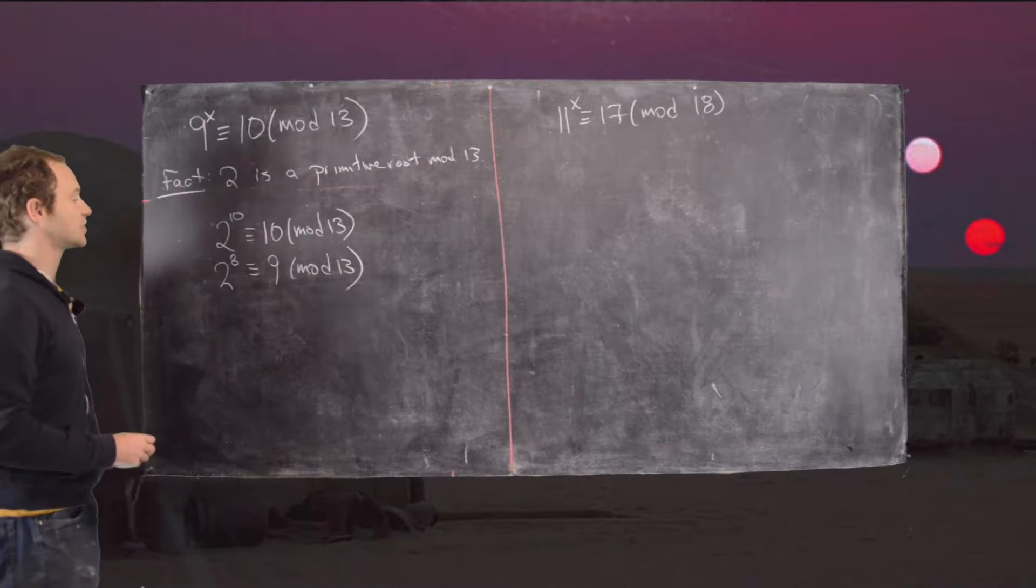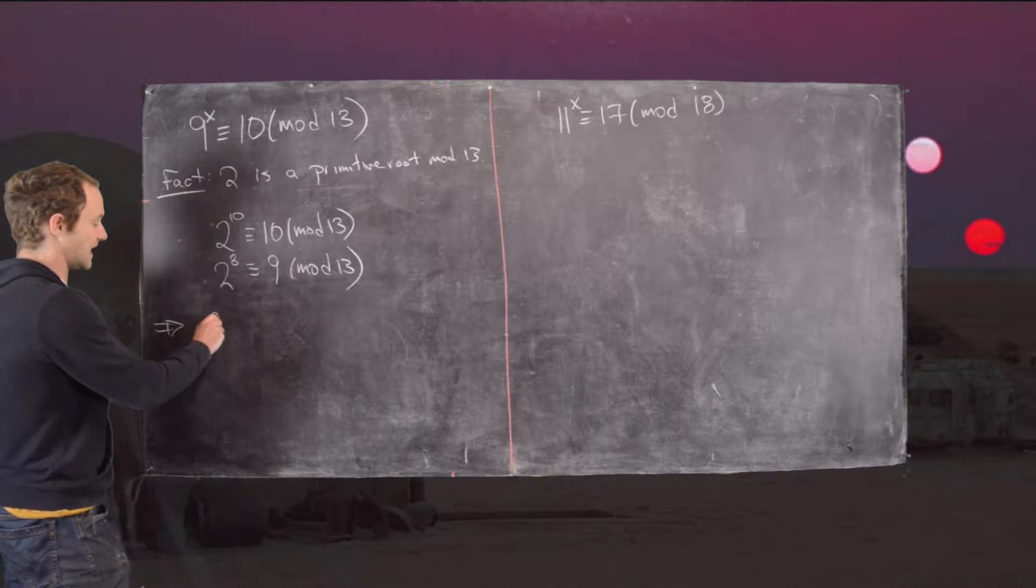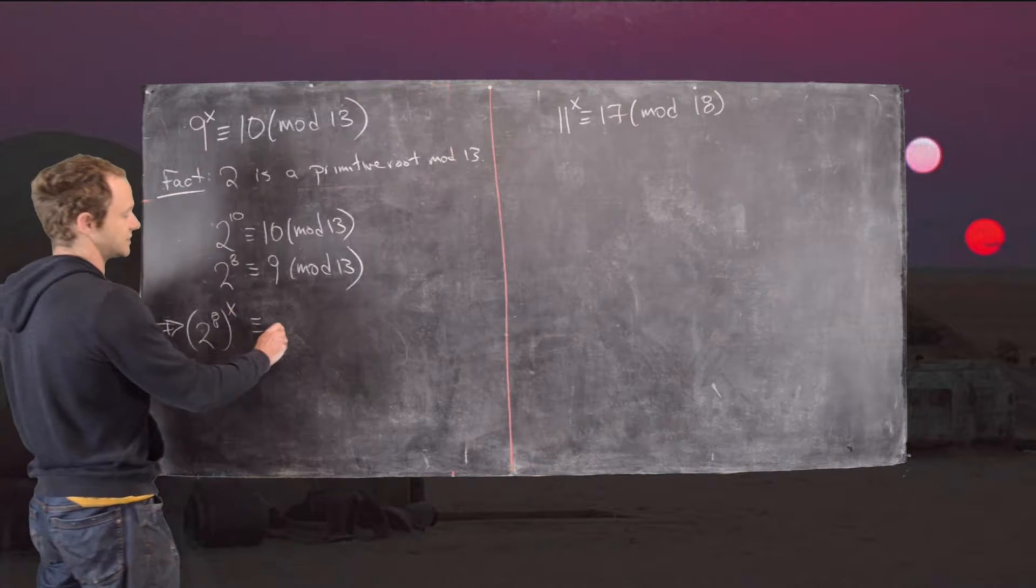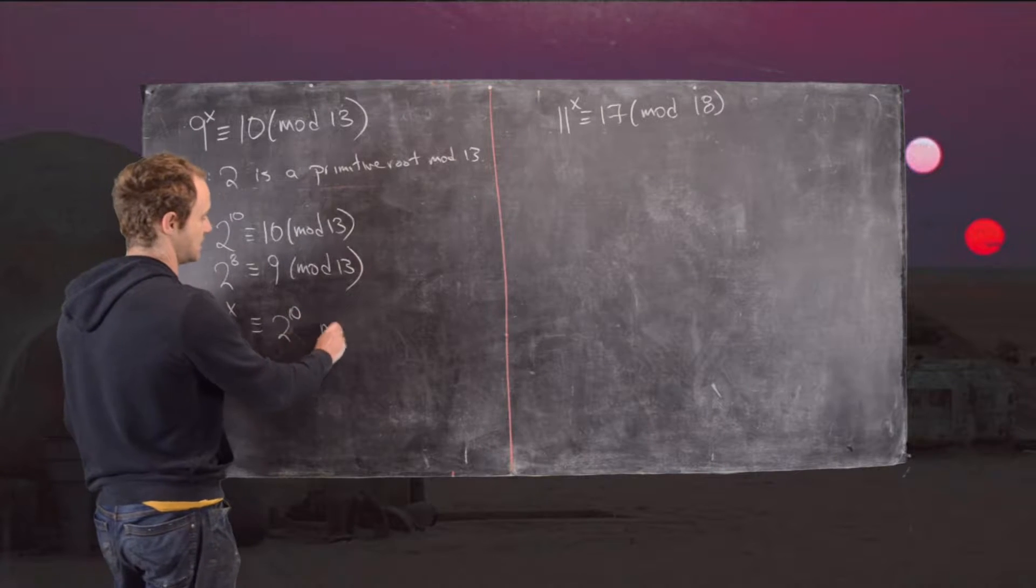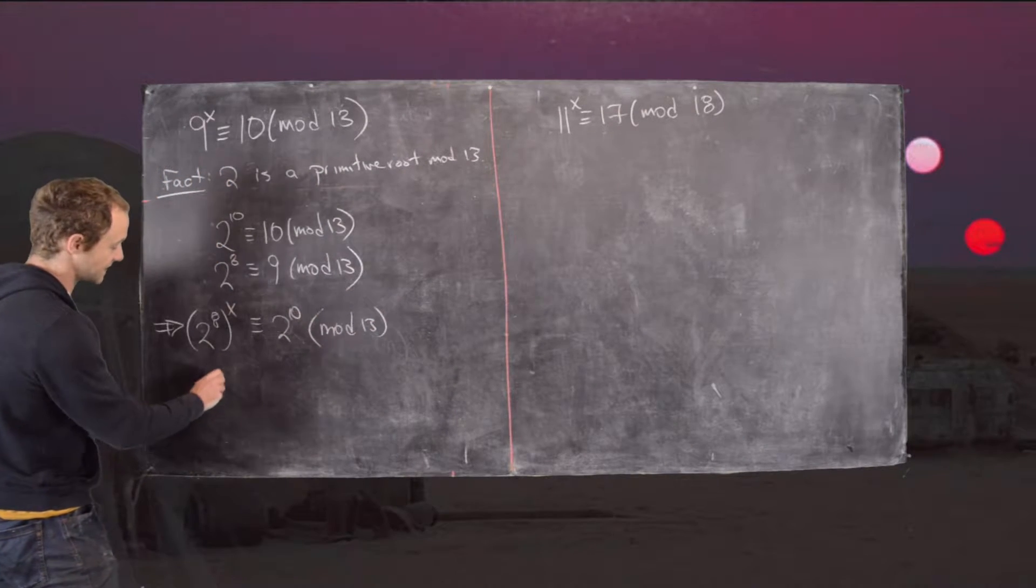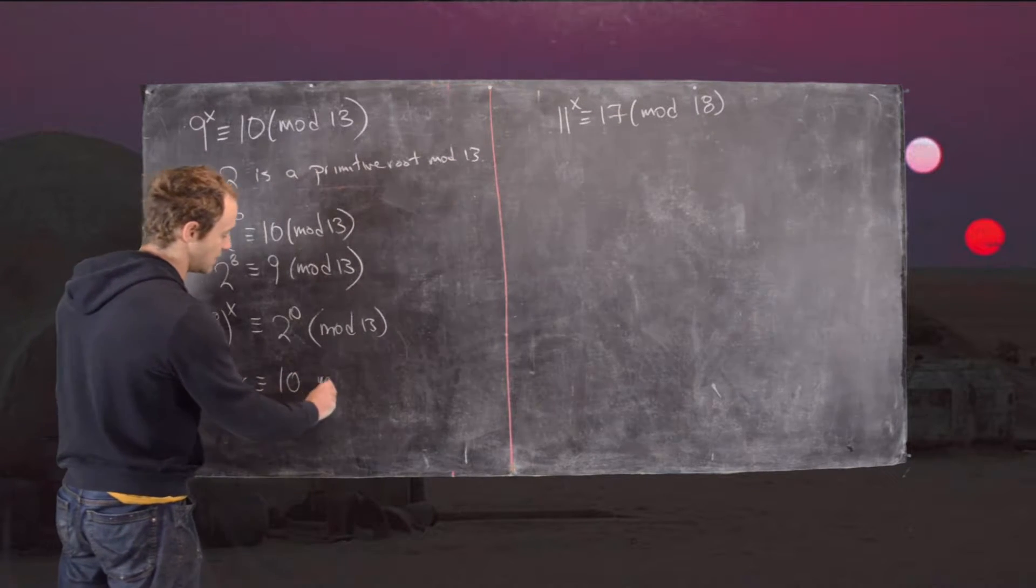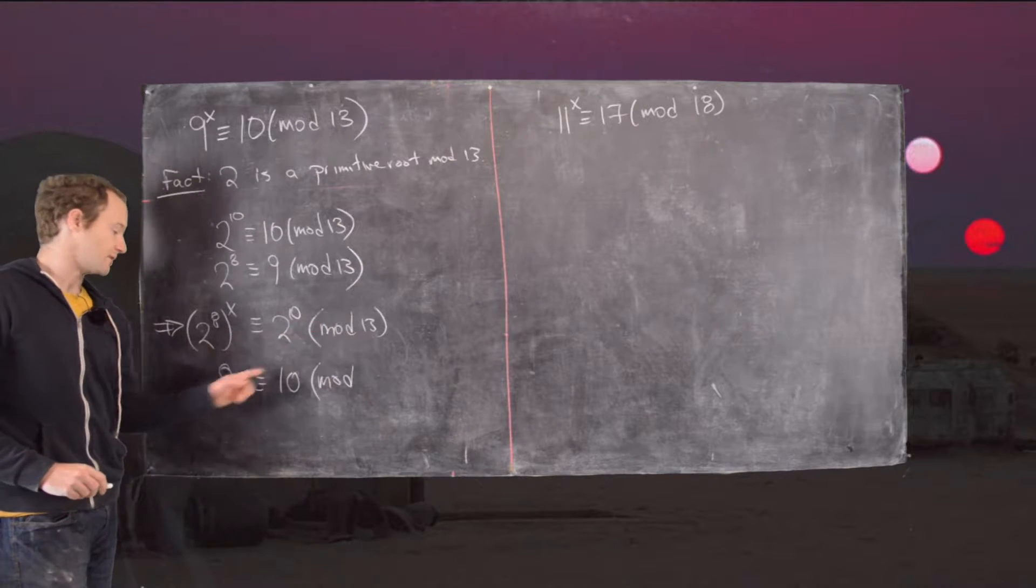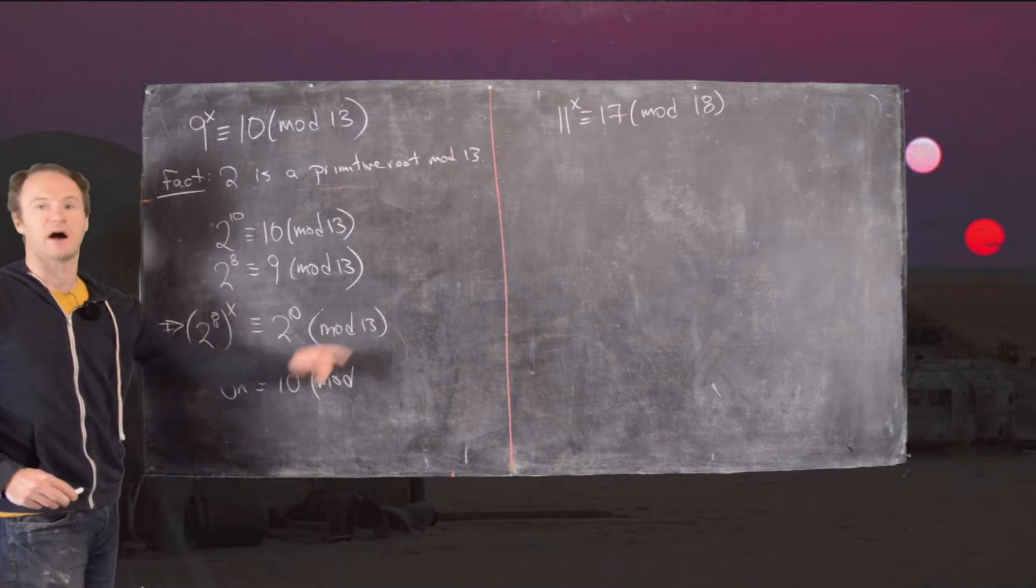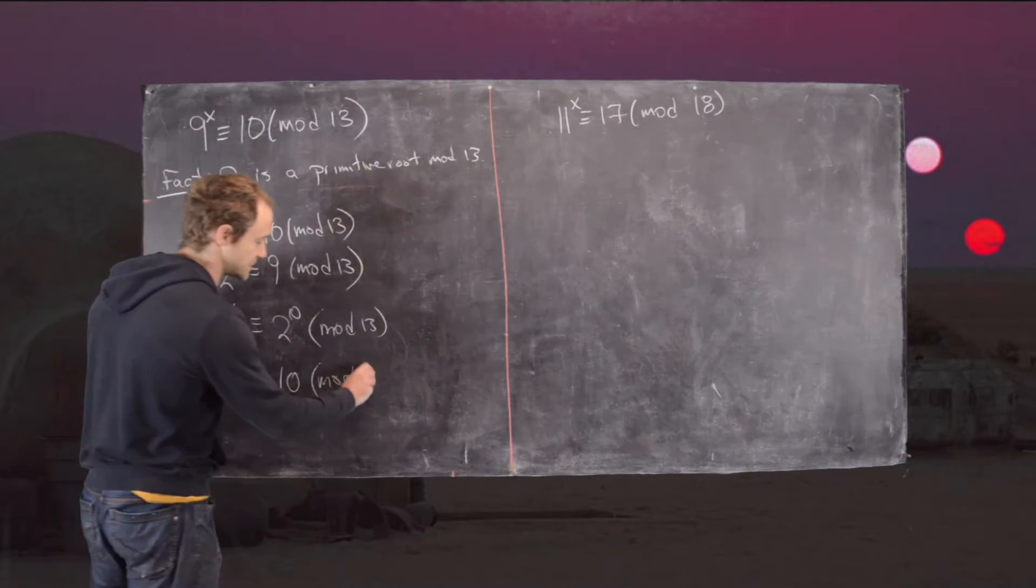That's going to turn this equation into the following. We have 2 to the 8 to the x is congruent to 2 to the 10 mod 13. That tells us 8x is congruent to 10 mod... But now since we're working in the exponent we're not mod 13 anymore. We're mod the Euler phi function of 13 which is 12.